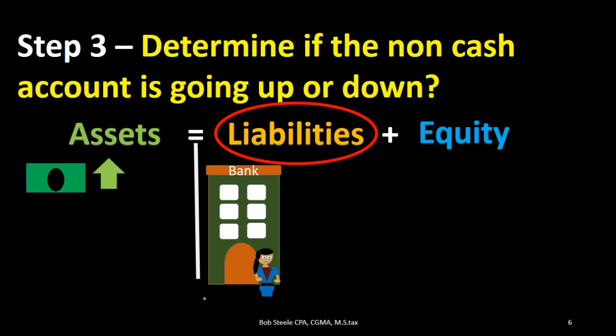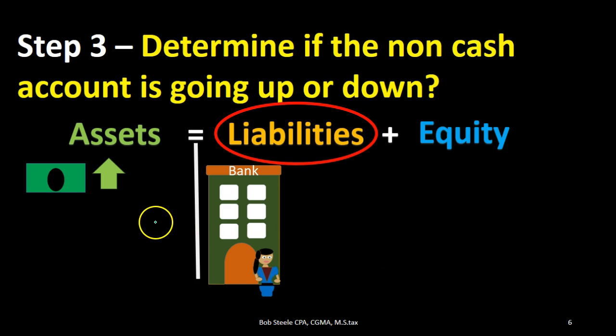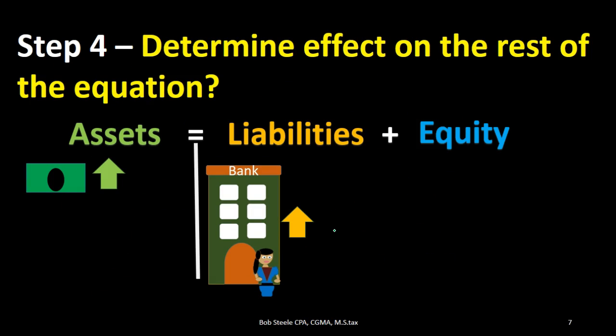Step three: determine if the non-cash account is going up or down. So there are two accounts that are affected — one is an asset account, cash, and the other we know is a liability. Now we need to determine if that liability is going up or down. If we know that cash is going up and it's an asset, and the liability is on the other side of the equal sign, that will indicate to us that it is going up. We want to think through the process and ask: does it make sense that the liability is going up? Well yes, we got a loan — the liability is going up, we owe it.